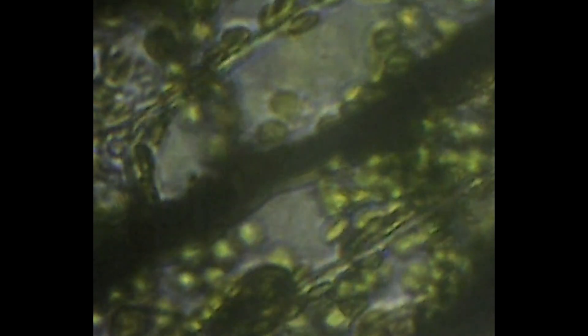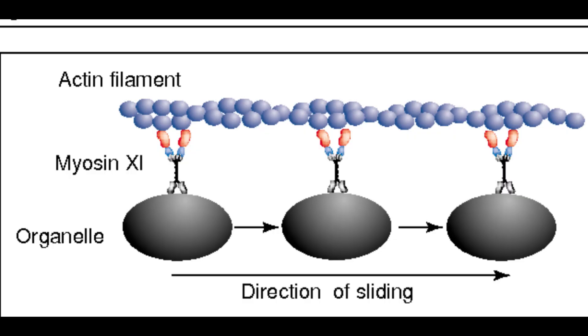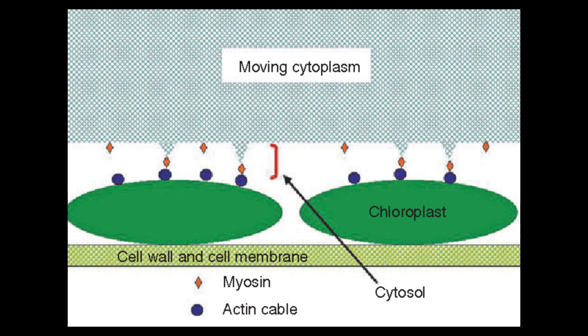This motion results from fluid being entrained by moving motor molecules of the plant cell. Myosin filaments connect cell organelles to actin filaments. These actin filaments are generally attached to the chloroplast and tonoplast membranes of plant cells.